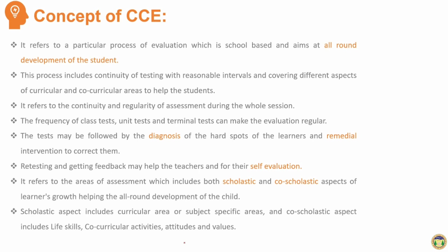The scholastic aspect is related to the teaching-learning process, academics, marks, and results. The co-scholastic aspect is related to the child's attitude, values, and sports. The scholastic aspect includes curricular area or subject-specific areas, and the co-scholastic aspect includes life skills, co-curricular activities, attitudes, and values.